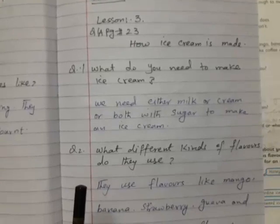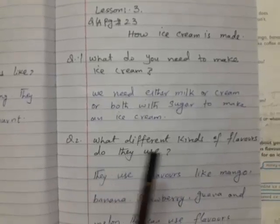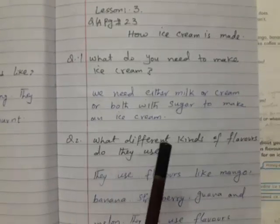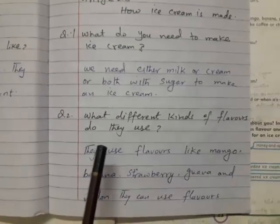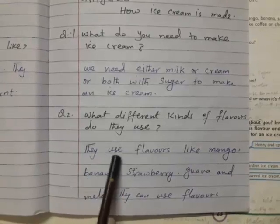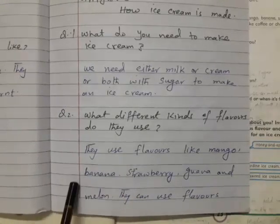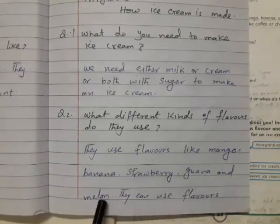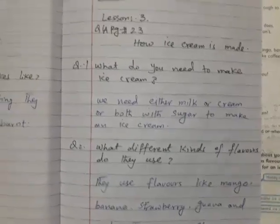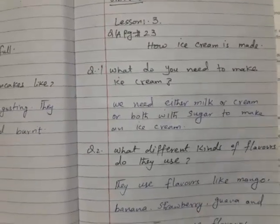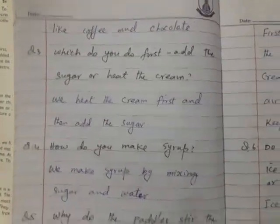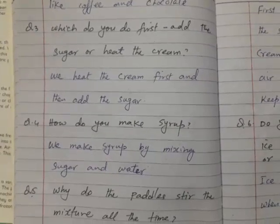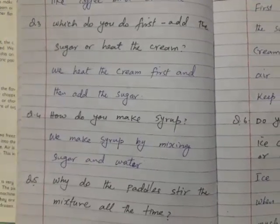First question is what do you need to make ice cream? We need either milk or cream or both with sugar to make an ice cream. The second question is what different kind of flavors do they use? They use flavors like mango, banana, strawberry, guava, and melon. They can use flavors like coffee and chocolate.